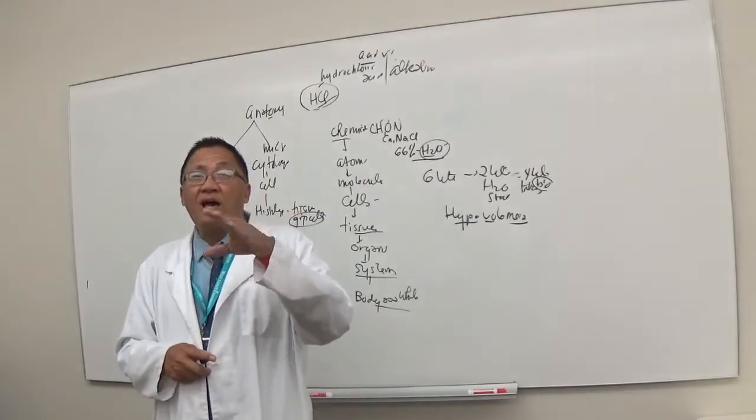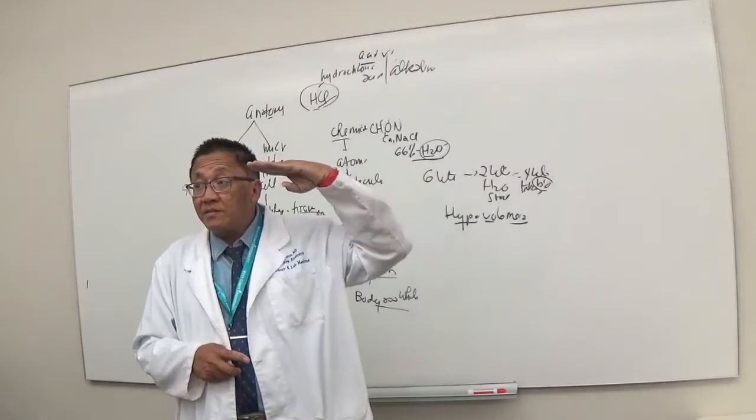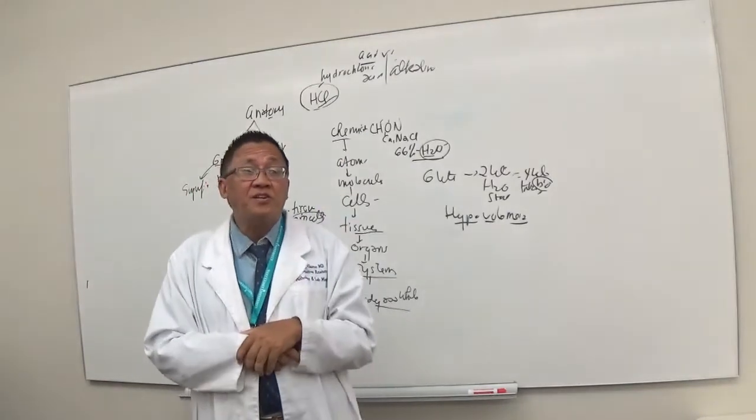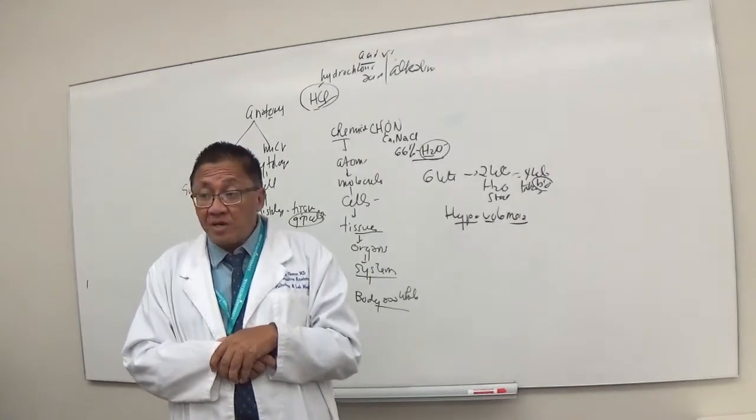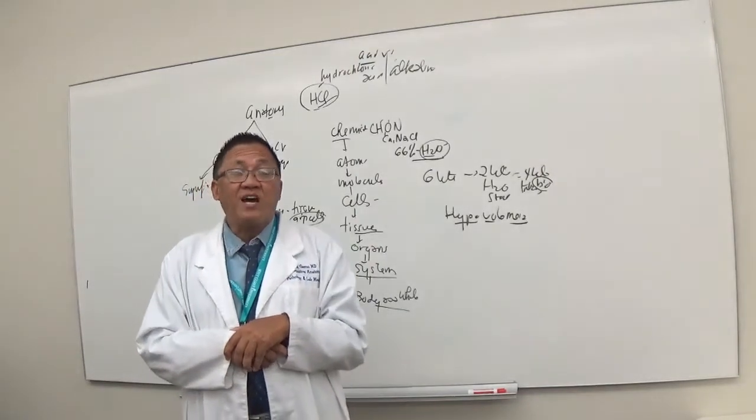So when we do a scan, we can tell where the pathology is. Particularly, for example, in stroke patients, we do a scan. We want to know exactly where the site of the lesion would be. We also want to know what kind of stroke. Are you familiar with the word stroke?